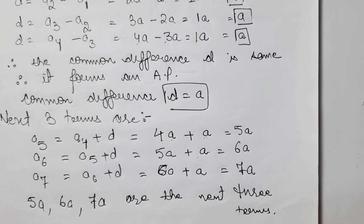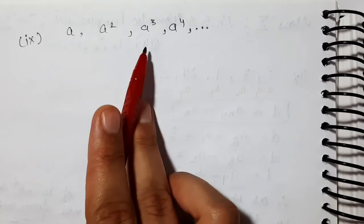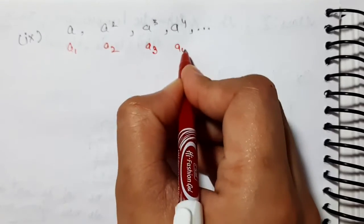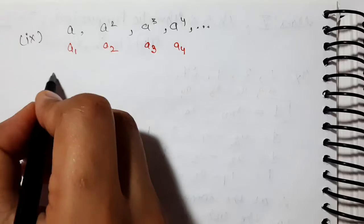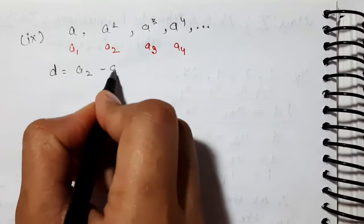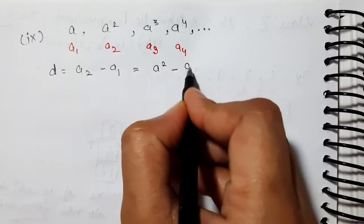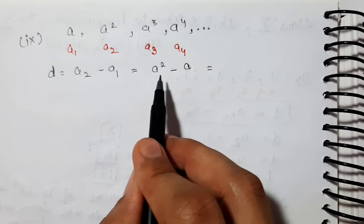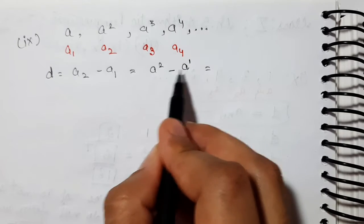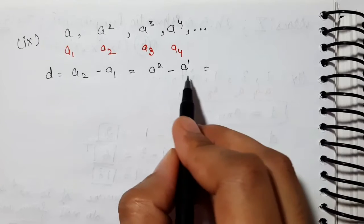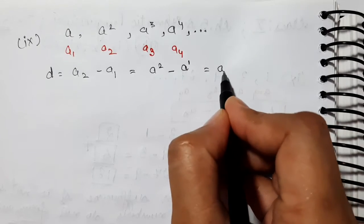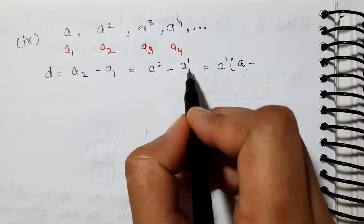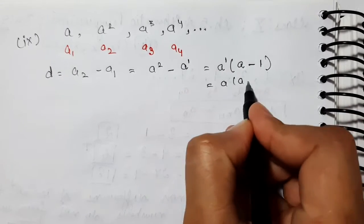The 10th part is done. Now we do the 11th part: A, A², A³, A⁴, and so on. These are the first, second, third, and fourth terms. We check using D. Second term minus first term: A² minus A. Here the terms are not like terms, so we take A as common (the smaller power). This gives A(A minus 1).